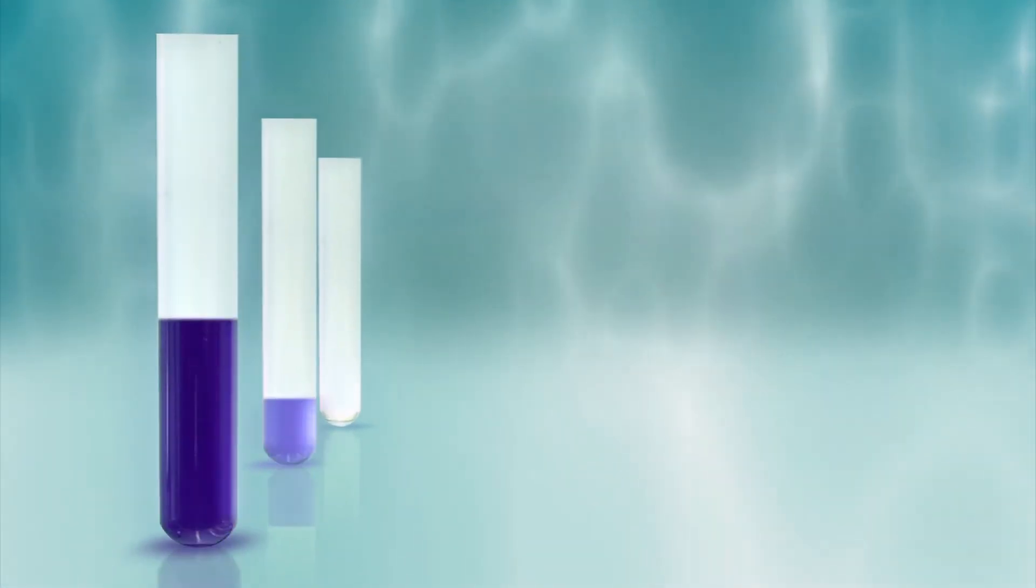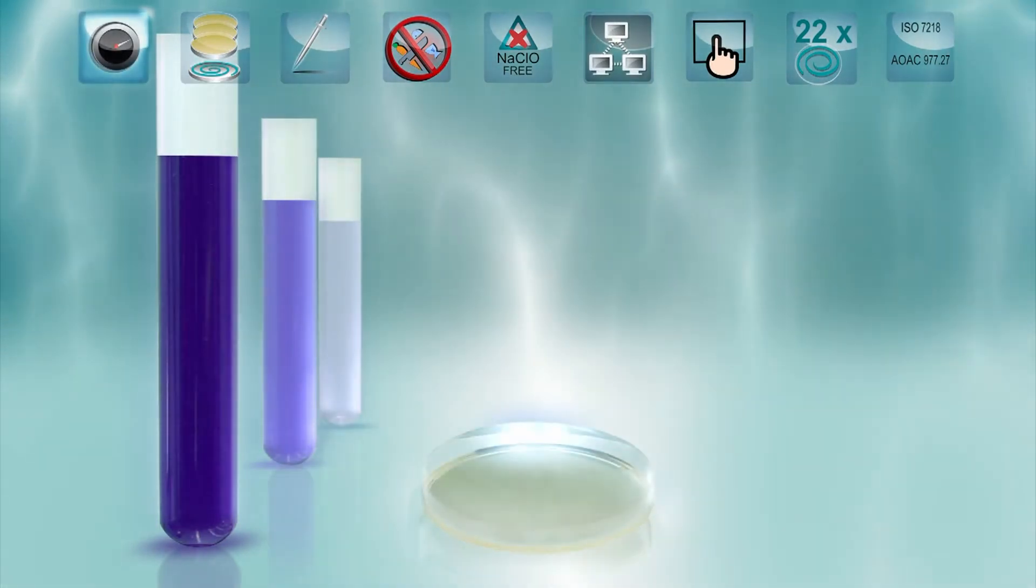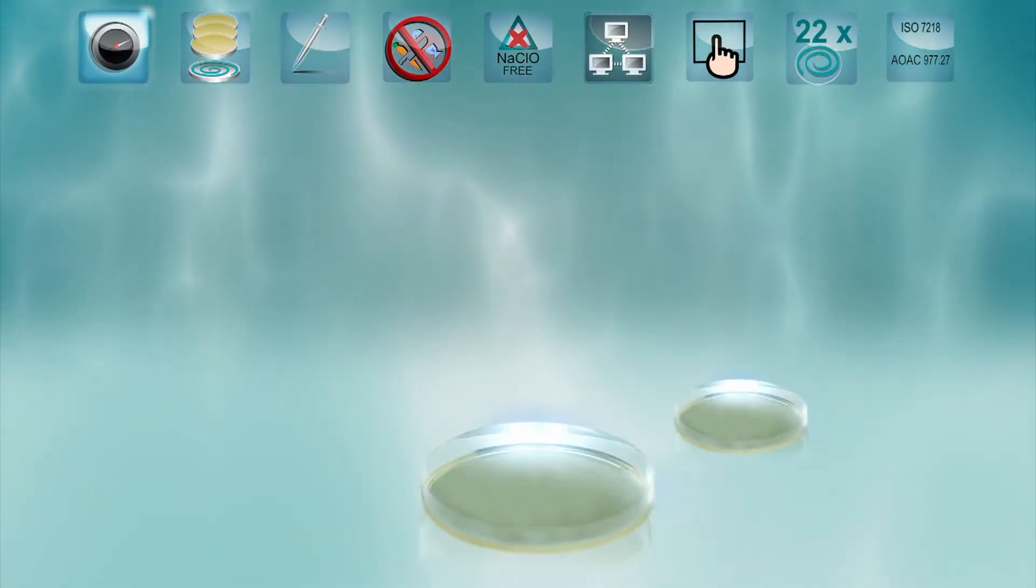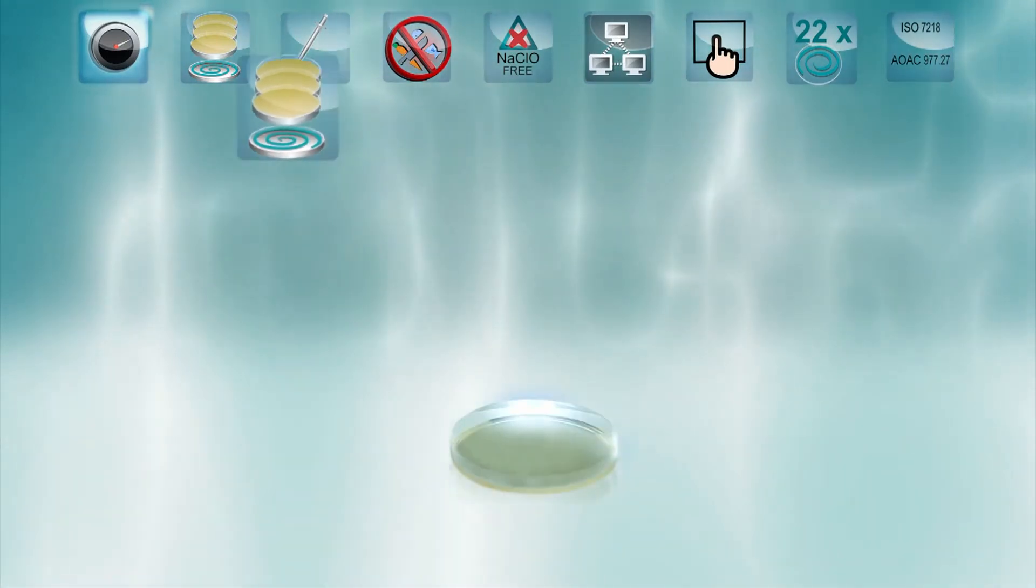The spread plate technique requires time-consuming serial dilutions. Spiral plating offers an alternative that reduces the time and Petri plates required. A single spiral spread spares the inoculation of three Petri plates.